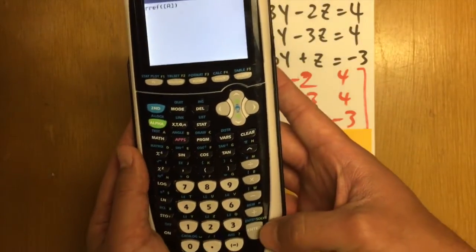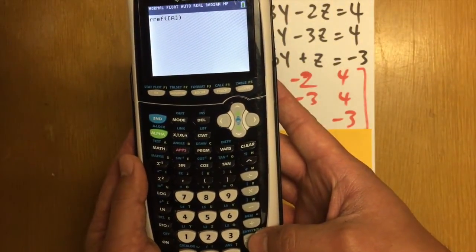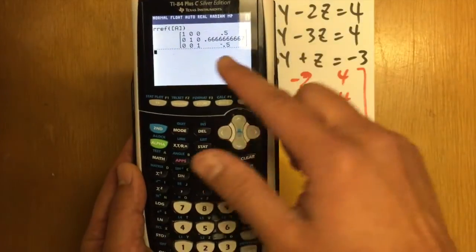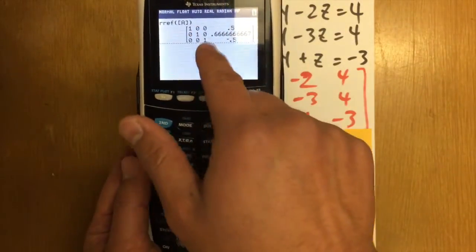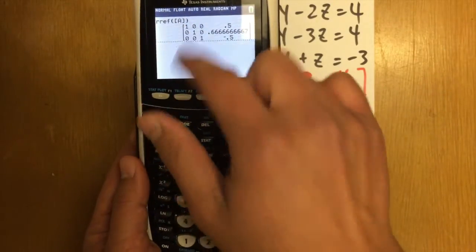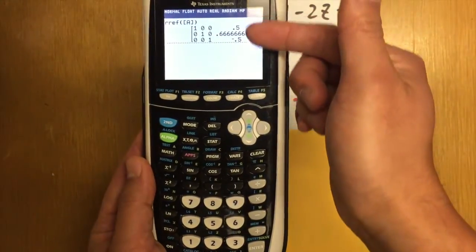And we are just going to hit enter once again. As you can see, this is in the RREF form. 1, 1, 1 on the diagonals, and then you have all these zeros right here, and these are the answers.